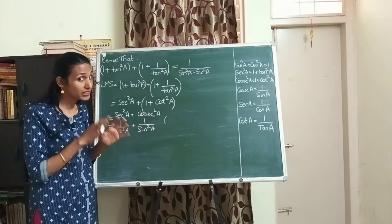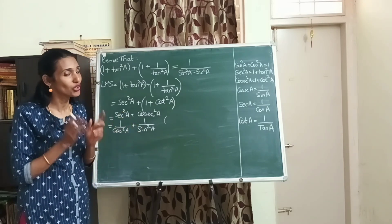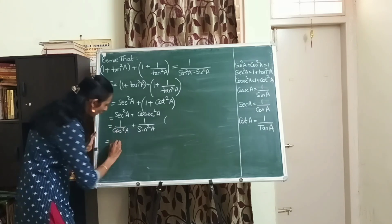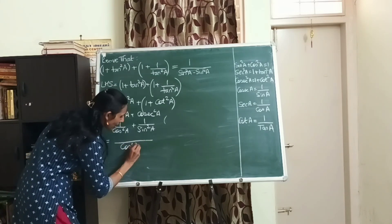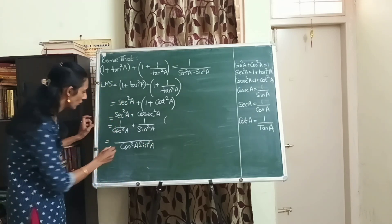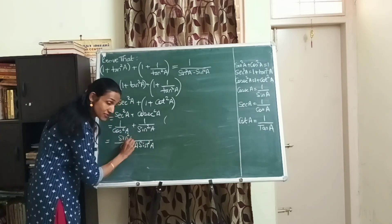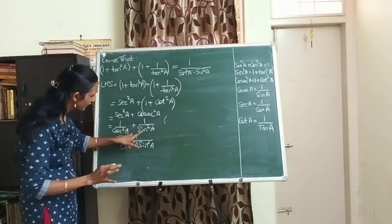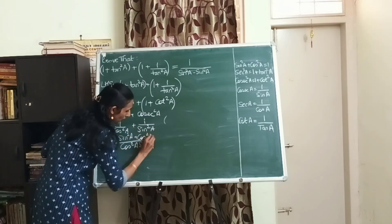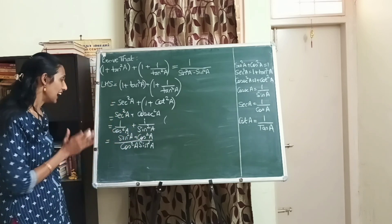Now this is one fraction whereas here I have two fractions, but because the denominators are different I cannot add them directly. What do I need to do? Yes, LCM. Let me take the LCM. The LCM will be cos square a into sin square a. Because this is cos square a, sin square a will come here, and here it's sin square a, so cos square a will come in the numerator.